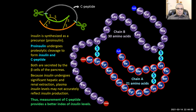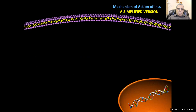Measurement of C-peptide provides a better index of insulin secretion. If a person comes to you unconscious and you want to find out whether it is an insulin-secreting tumor or whether they took a high dose of insulin causing hypoglycemic coma, you measure the C-peptide. If C-peptide is present and high, there may be an insulin-secreting tumor. If there is no C-peptide, the patient may have taken a high dose of exogenous insulin.